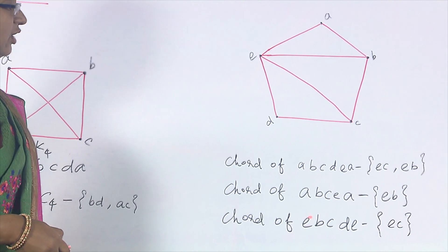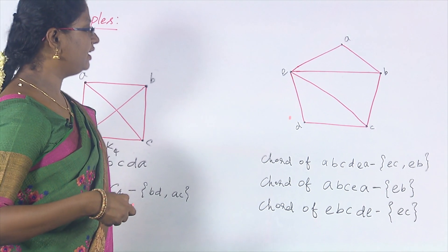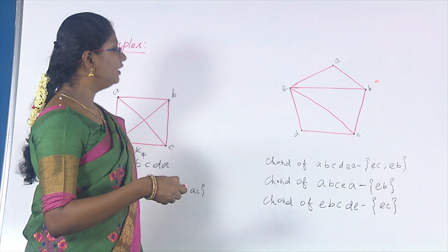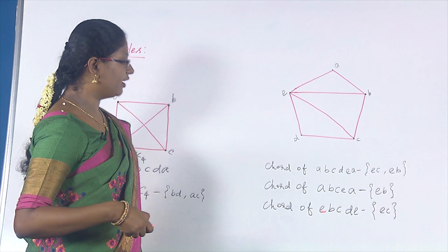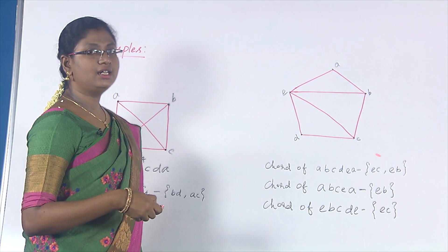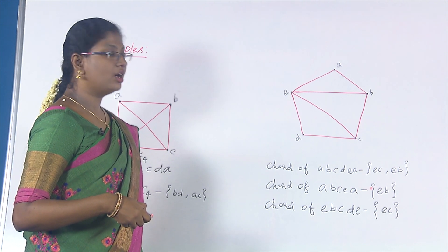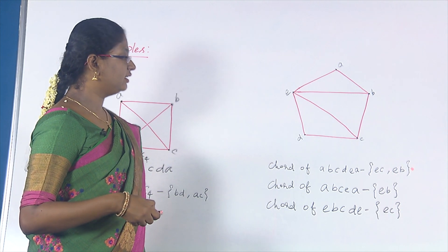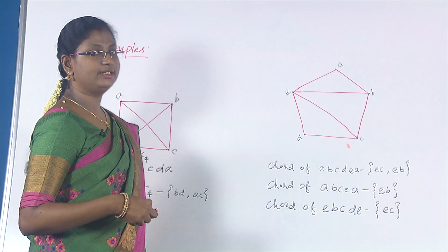We also have another cycle of length 4, that is E, B, C, D, E. This is also a cycle of length 4. Here we have a chord called E–C. So E–C is a chord of the cycle E, B, C, D, E. Considering all the cycles of length greater than or equal to 4, all of them have chords — some even have two chords — which means this is a chordal graph.